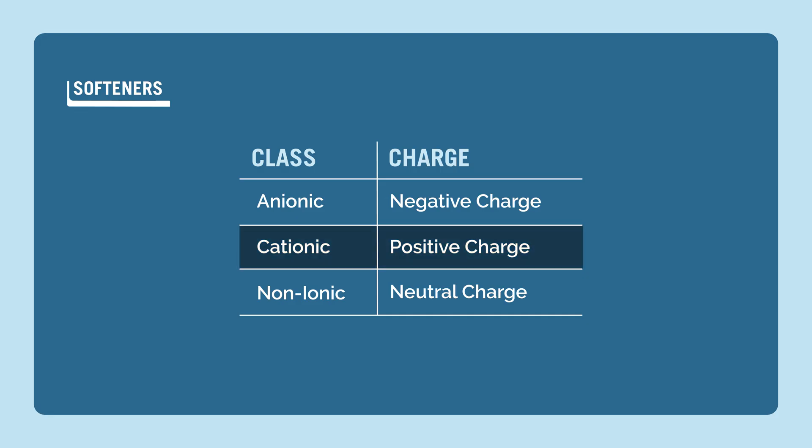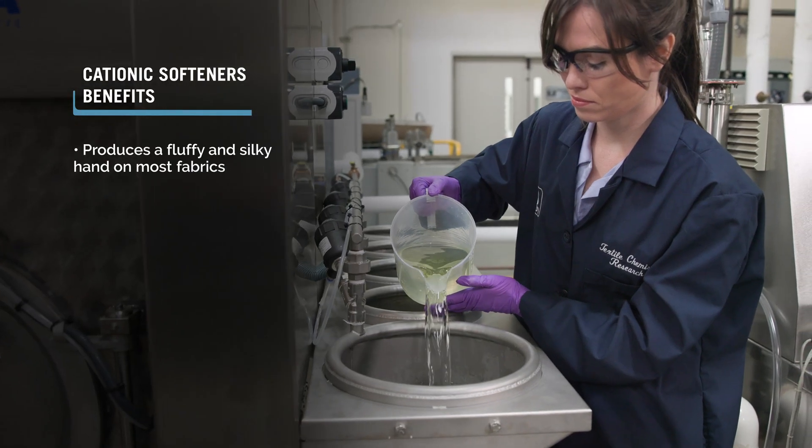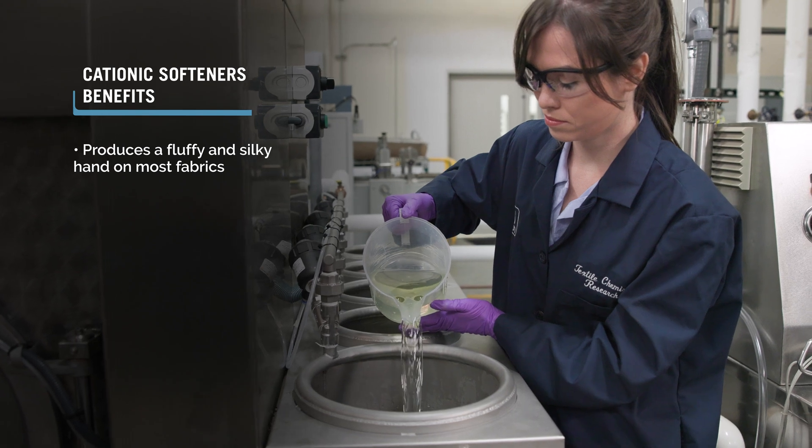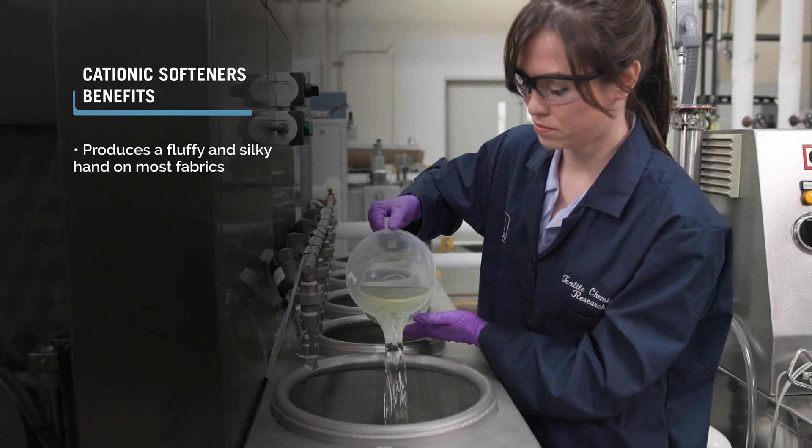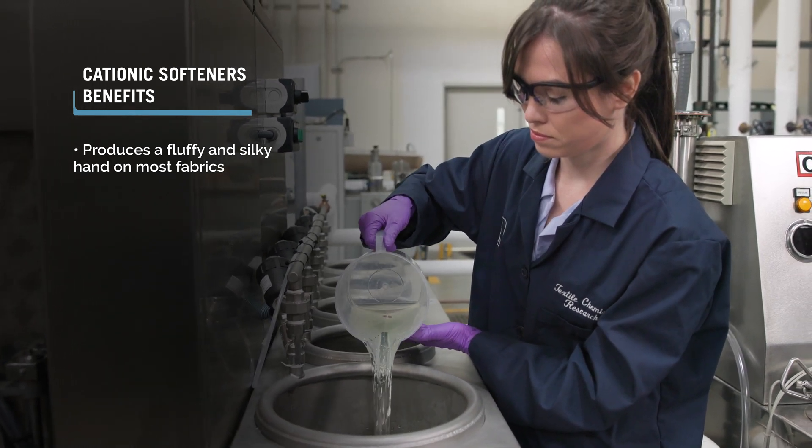A second type of softener, cationic, has a positive charge. This type of softener produces a fluffy and silky hand on most fabrics. It doesn't take much to get this effect on cotton because of the ionic charge of these chemicals.